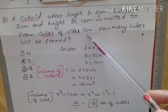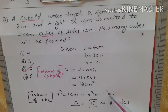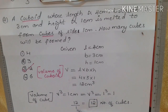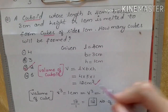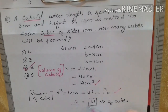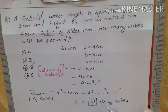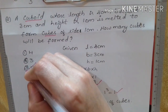Volume of cube V = side³ = 1³ = 1 cm³. Therefore, number of cubes = volume of cuboid divided by volume of cube = 12 ÷ 1 = 12. So 12 cubes are formed. Option 3 is the right answer.